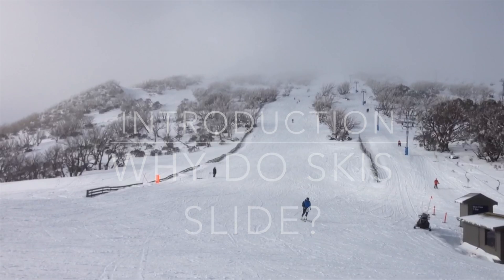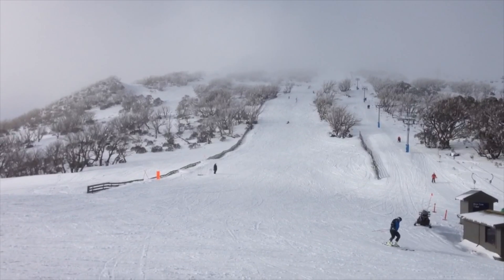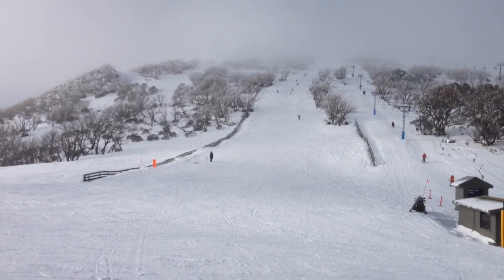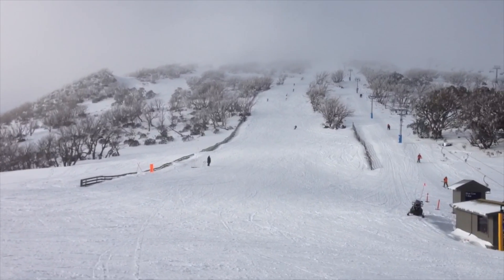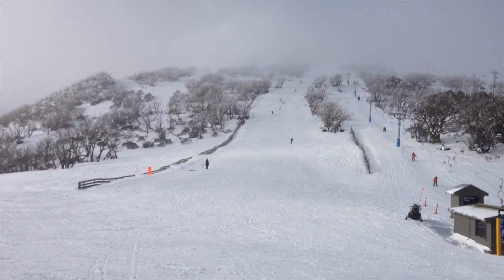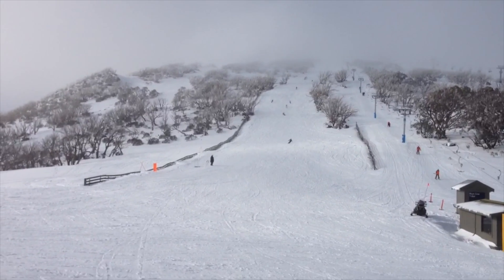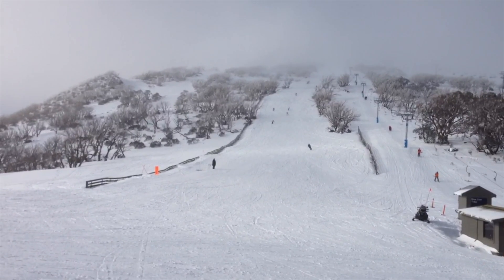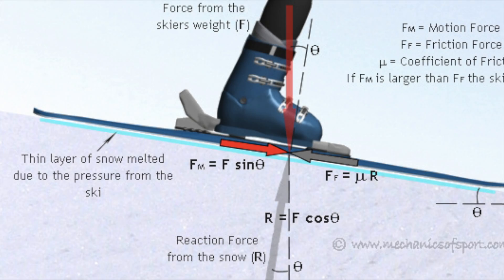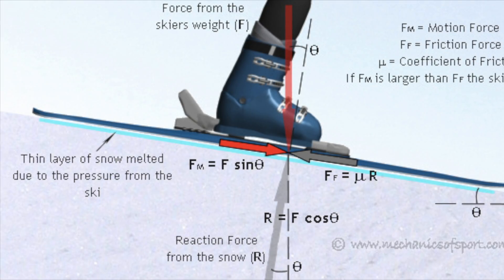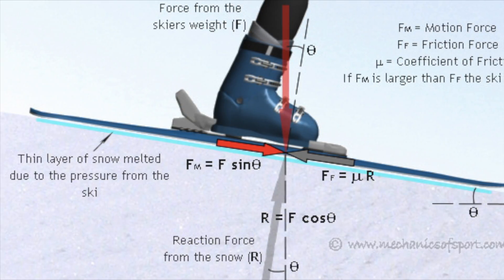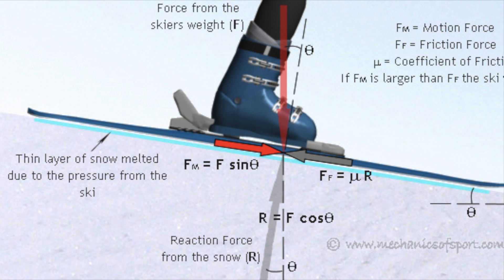Why do skis slide? The temperature at which water freezes changes with pressure, so when the skier's skis are put on the slopes, the snow directly underneath them melts, reducing the friction. The more pressure applied, the less friction the skier will face.